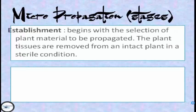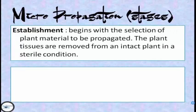There are also stages in micropropagation. The first stage is establishment. It begins with the selection of plant material to be propagated, and the plant tissue is removed from an intact plant under sterile conditions.